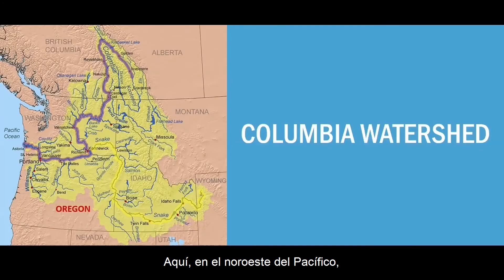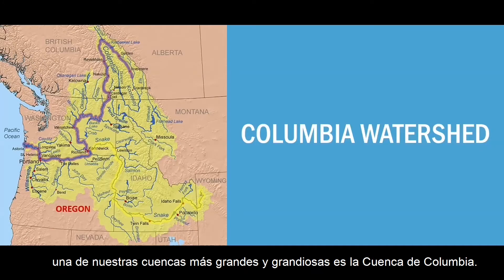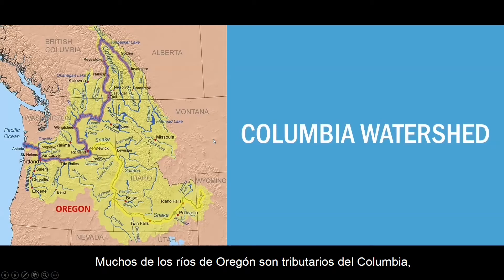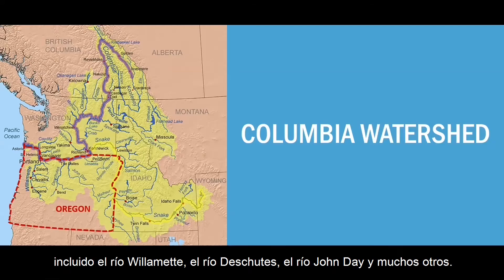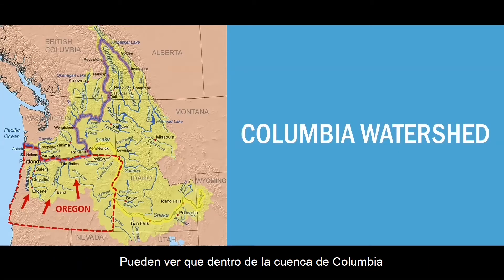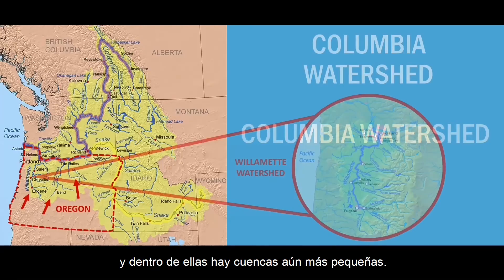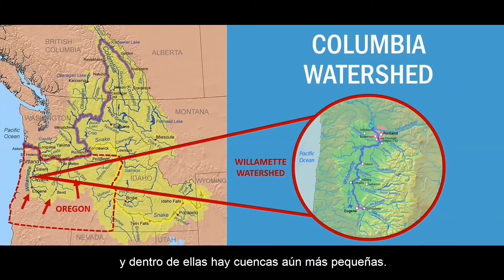Here in the Pacific Northwest, one of the biggest and grandest watersheds is the Columbia watershed. Many of the rivers in Oregon are tributaries to the Columbia, including the Willamette River, the Deschutes River, the John Day River, and many others. You can see that within the Columbia watershed are many smaller watersheds, and inside of those are even smaller watersheds.